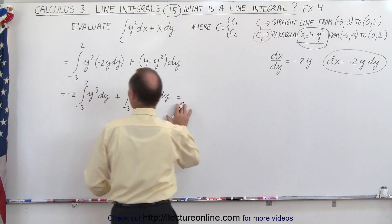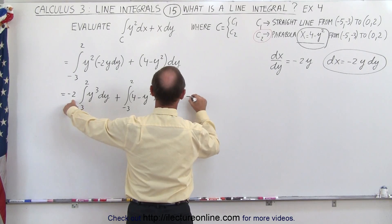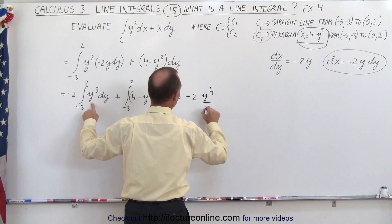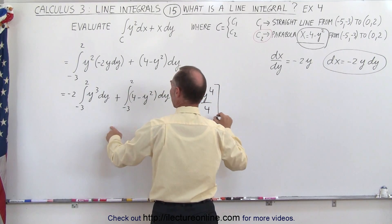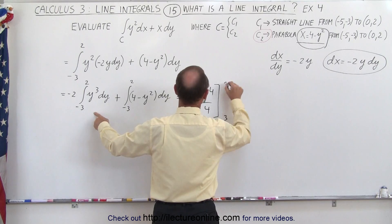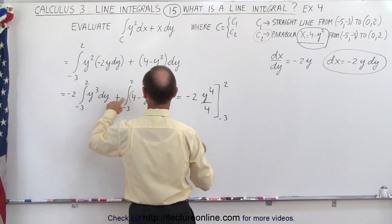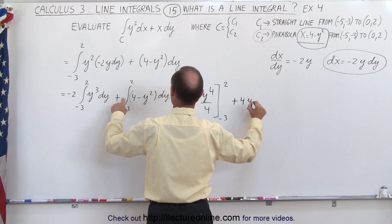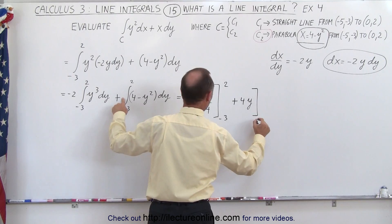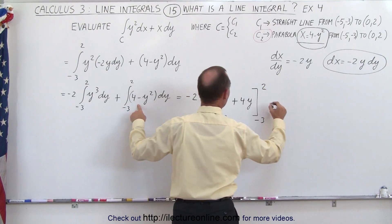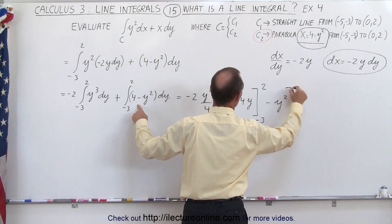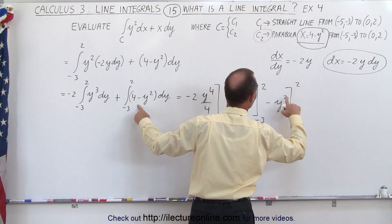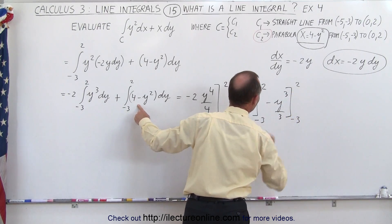Now integrating this, we get minus 2 times y to the fourth over 4 evaluated from minus 3 to 2, then plus 4y evaluated from minus 3 to 2, and then minus y cubed over 3 evaluated from minus 3 to 2.